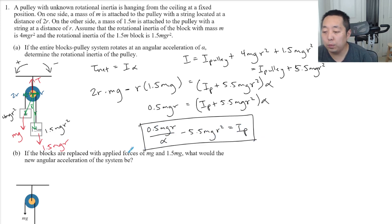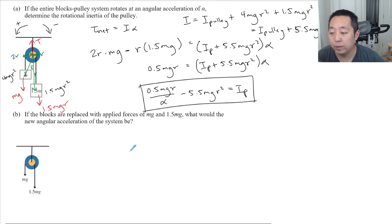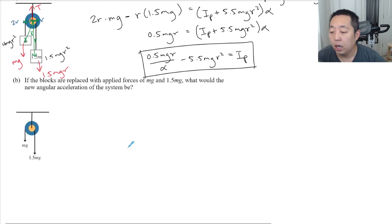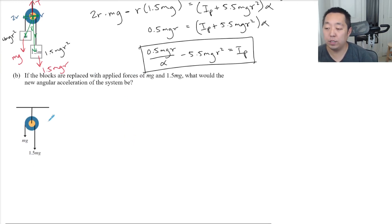Now if the blocks are replaced with applied forces of Mg and 1.5 Mg, what would be the new angular acceleration of the system? Now the system is less - there's no more blocks.